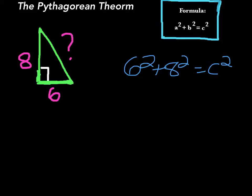6 squared is just 6 times 6, which equals 36. 8 squared is just 8 times 8, which equals 64, equals c squared.